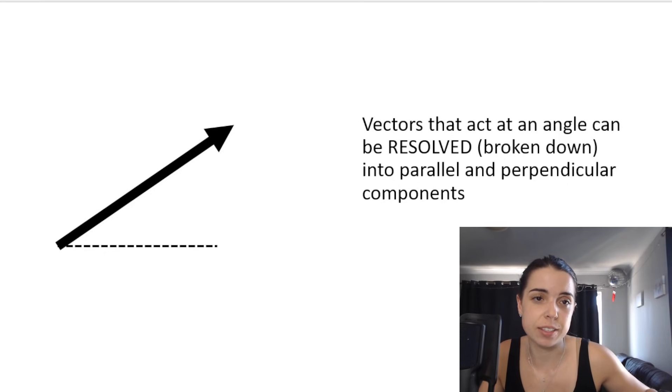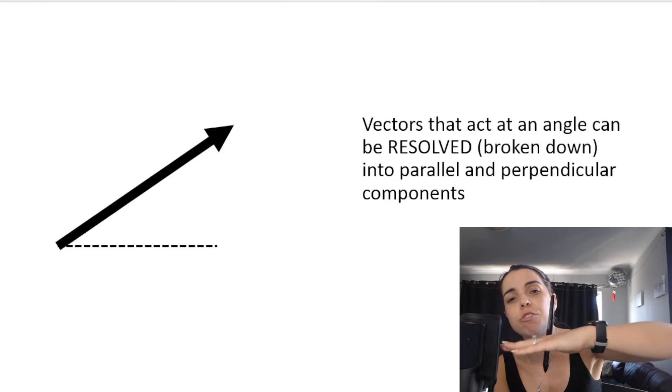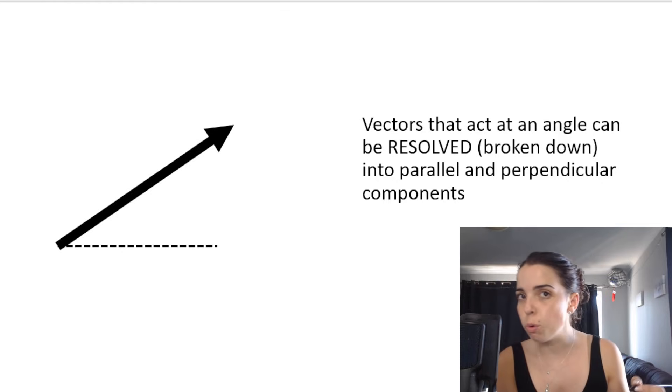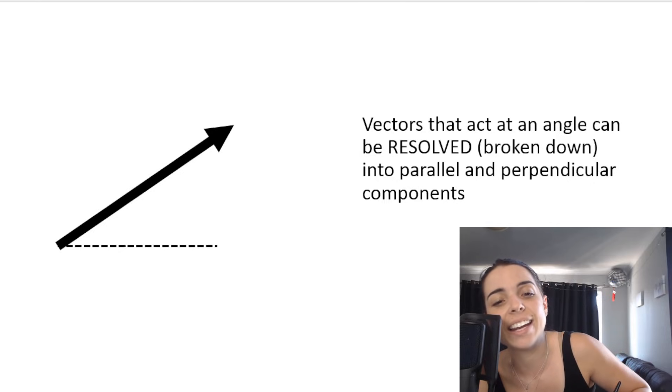This is an example of a vector. Now, as you know, vectors act at a particular angle relative to either the horizontal or the vertical. You can see the dotted line that represents the flat horizontal. This vector—it could be a force vector, it could be a velocity vector, whatever the vector is—acts at an angle. Let's say the angle is 30 degrees.